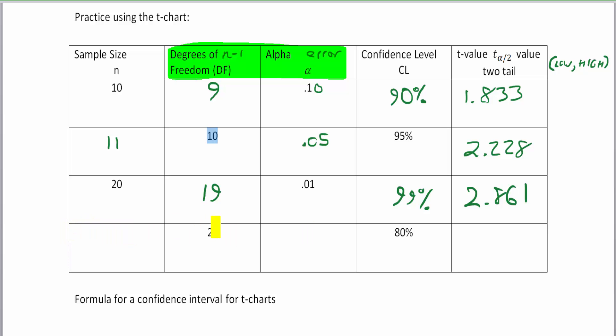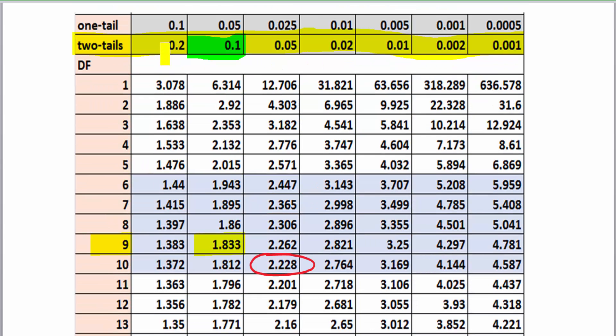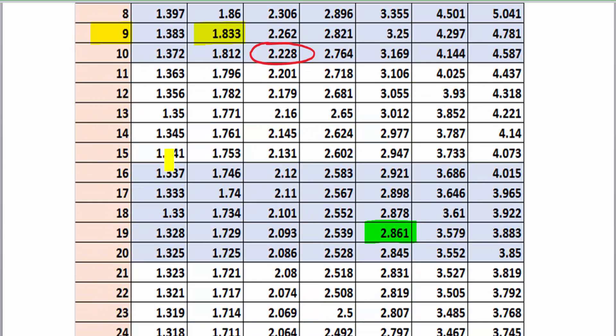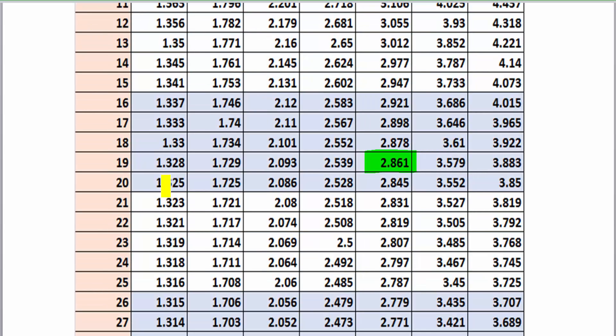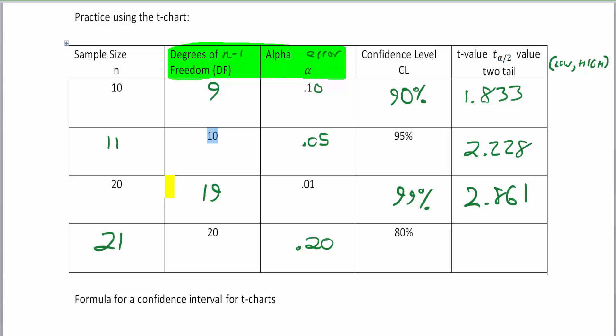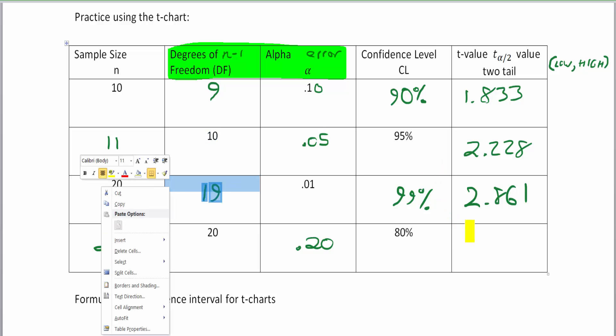Now for this one, I have 20 degrees of freedom, which would put me at a sample size of 21, and my alpha error since I am at 80% confidence—which doesn't happen too often but sometimes does—puts me at 0.2 or 0.20 to be a little stylistic. Well, 0.20 is the first row here, and if I go down to 20 degrees of freedom, that puts me at 1.325, and that would be my score.